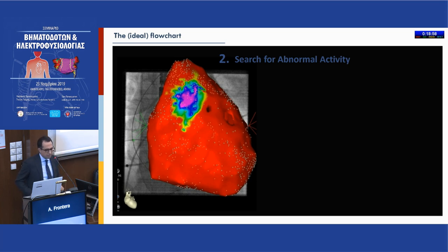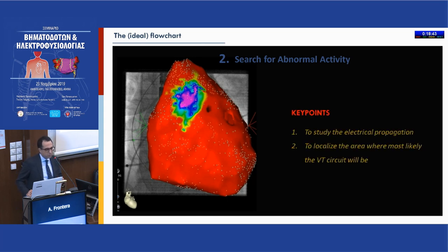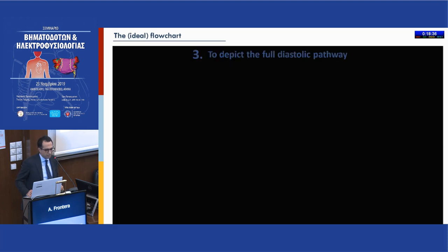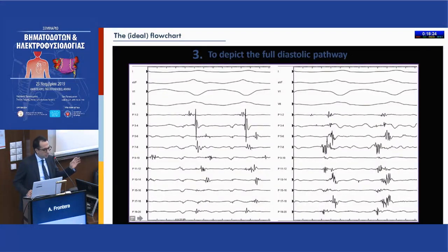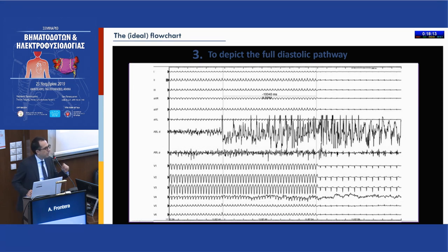When there is slow conduction you have some late activity, and this island of violet color is represented by late potentials. The key point is that we want to study the electrical propagation and localize where the area of the VT circuit most likely is. We usually place our PentaRay catheter — the multi-spline multi-electrode tool — because we want to depict the full diastolic pathway. On the left panel you see the entrance and the isthmus, and on the right panel you have the exit site of the VT circuit.